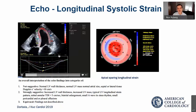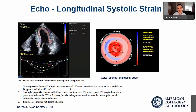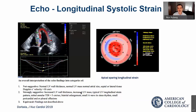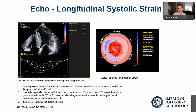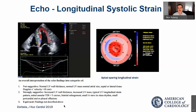Findings not suggestive of cardiac amyloidosis by these consensus recommendations include normal wall thickness and normal diastolic function. Strongly suggestive findings include increased wall thickness, a typical strain pattern showing apical sparing, and diastolic dysfunction. Anything equivocal falls in the middle. Echo itself is not diagnostic of cardiac amyloidosis.